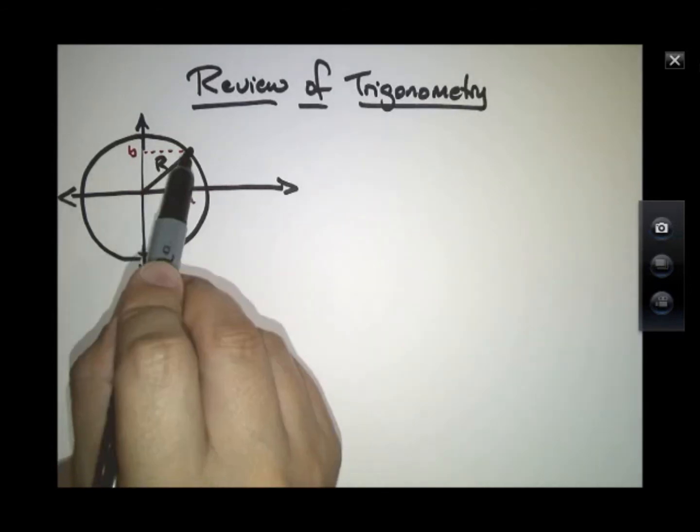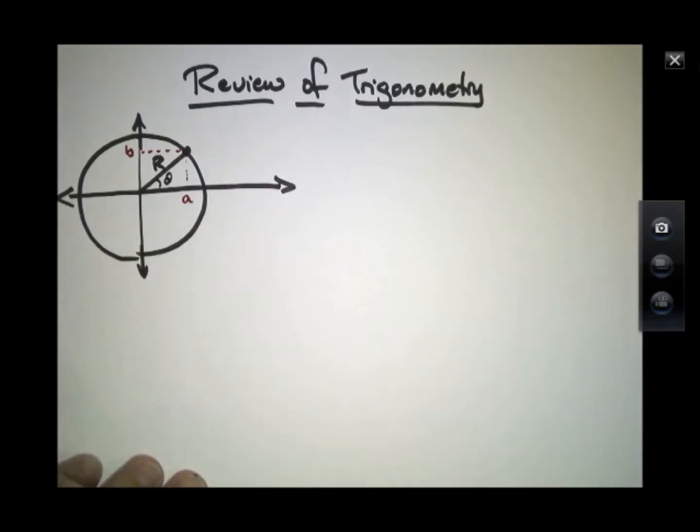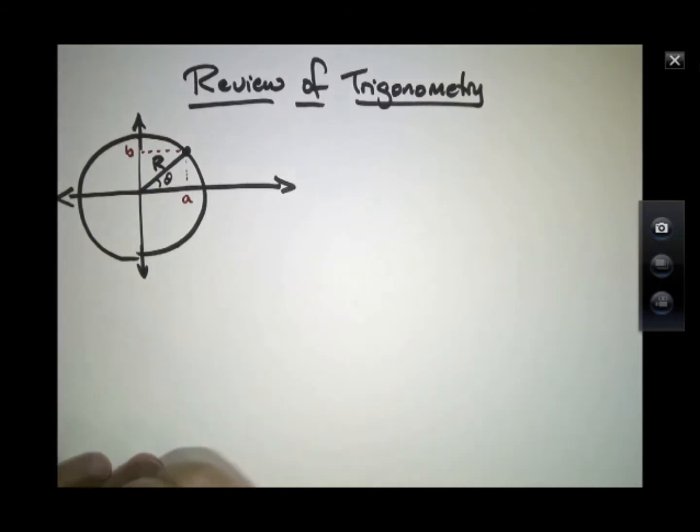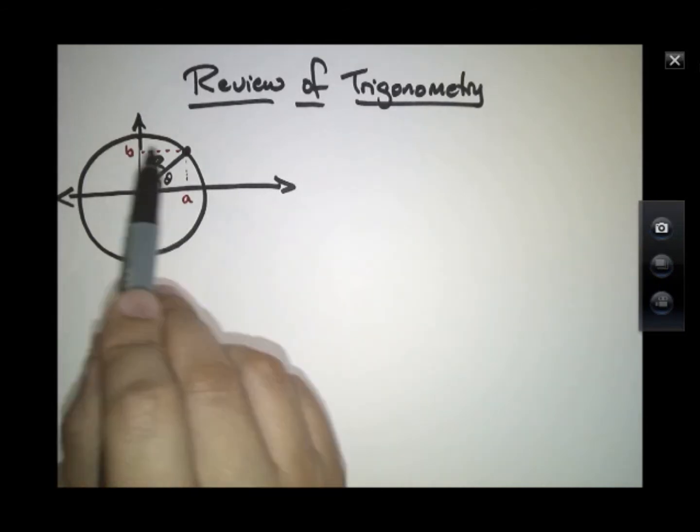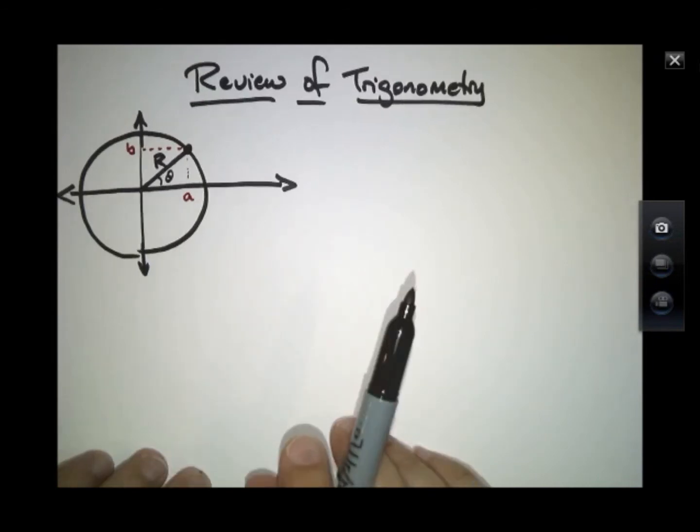As this point moves further and further around, there's an angle that's included here between that little radius and the x-axis, and that angle starts at zero and sweeps up larger and larger until it gets all the way around and becomes 360 degrees.